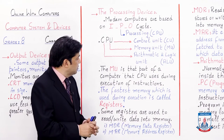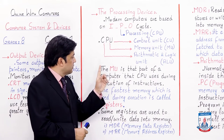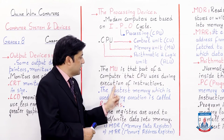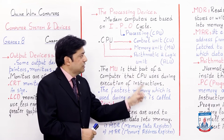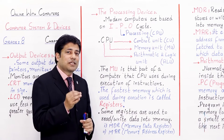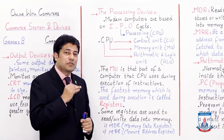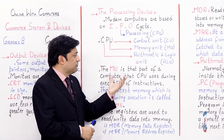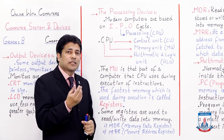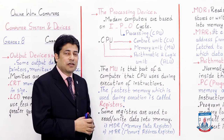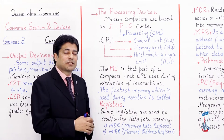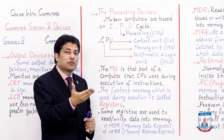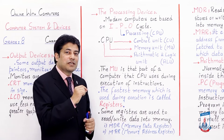Let's start with the Memory Unit. The memory unit is that part of a computer that CPU uses during the execution of instructions. Computers are a dumb device — they only work when instructed. For example, if you say 2 plus 2 is 4, you press 2 on the keyboard, then the plus sign, then 2 again, and the result will be shown on screen.